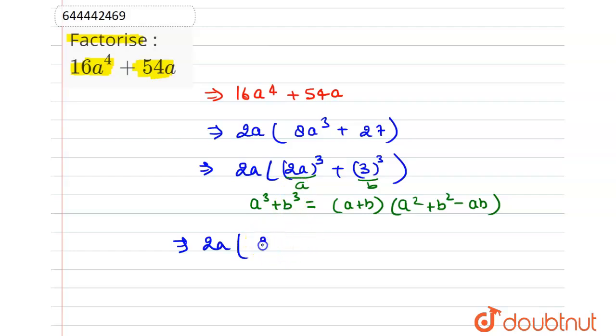So a plus b will be 2a plus b is 3 into a square that is 2a square plus b square that is 3 square minus ab, that is 2a into 3.